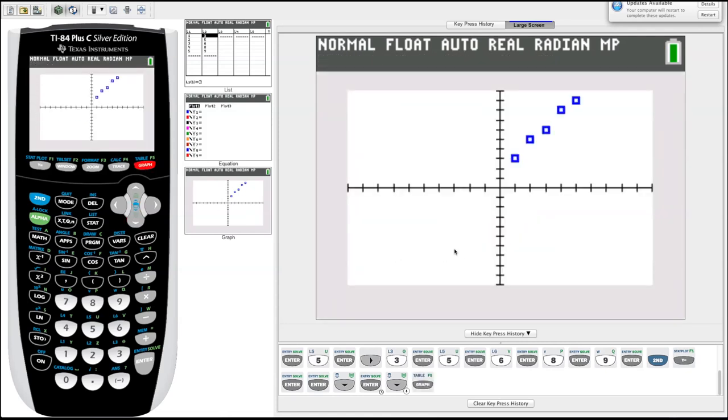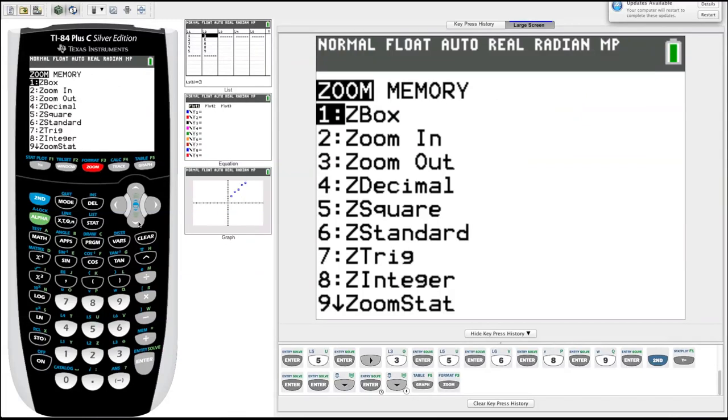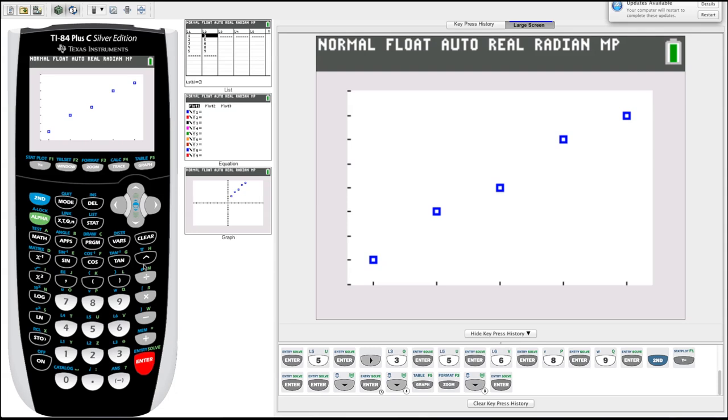And there we have our data over here, our blue dots. But we have kind of a lot of open space here that we don't really need to have. I'd like to kind of zoom in on the data. So we can just go over to zoom and there's a special zoom called number nine, zoom stat, and it will fit our screen perfectly to the data we have. So let's hit enter on zoom stat. Now that's much better. Nice and clean, takes up the whole screen.